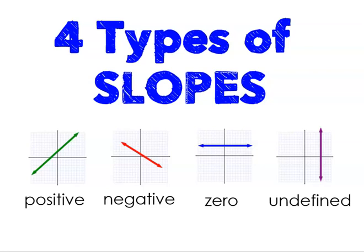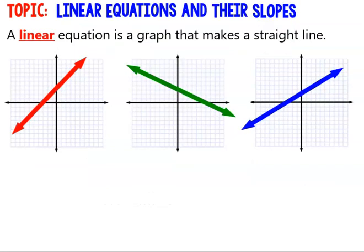In this tutorial, you'll learn about the four different types of slope. So a linear relationship or an equation can be graphed, and when it's graphed, it always makes a straight line.